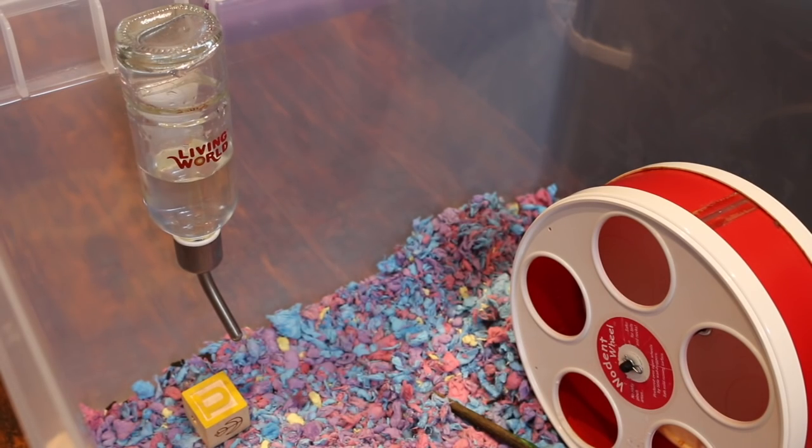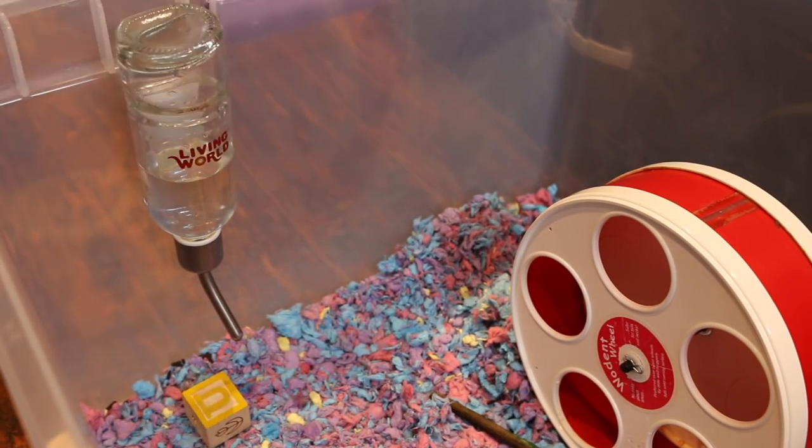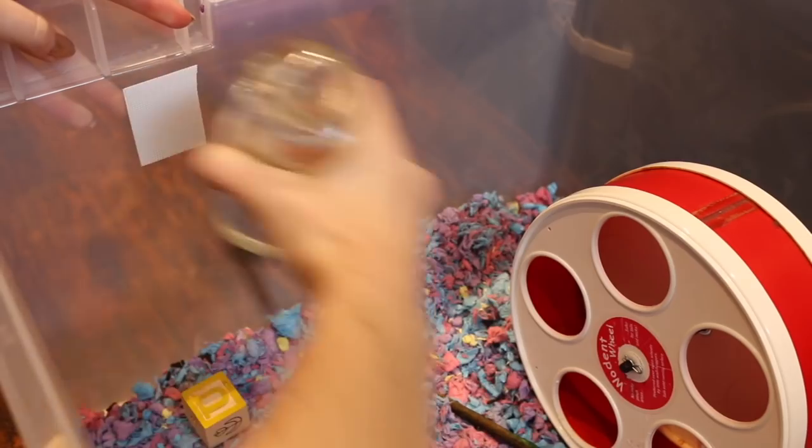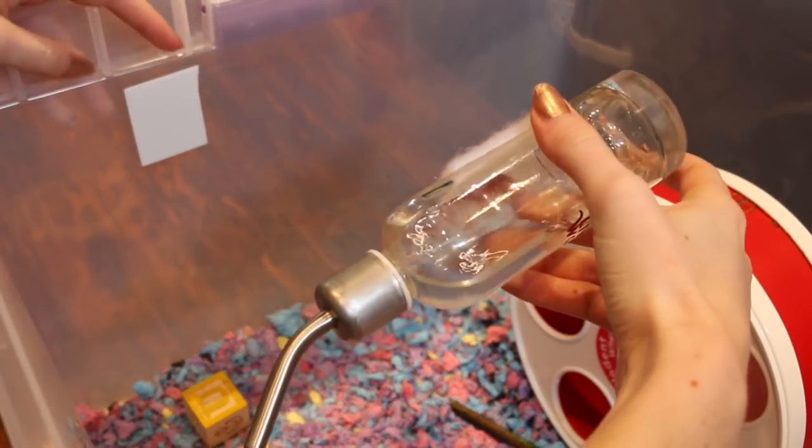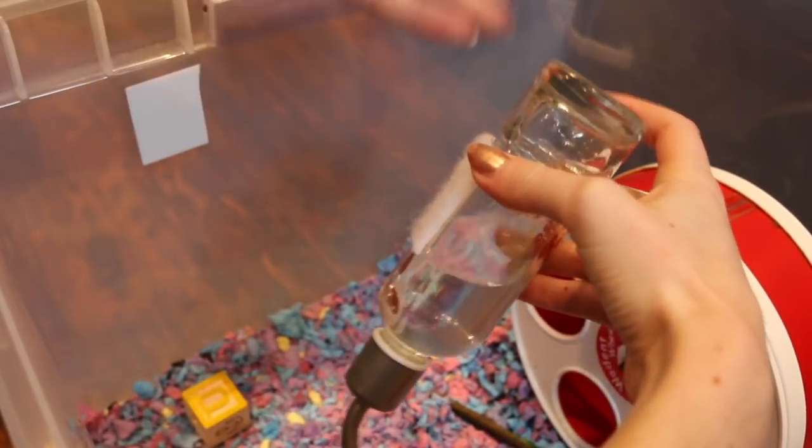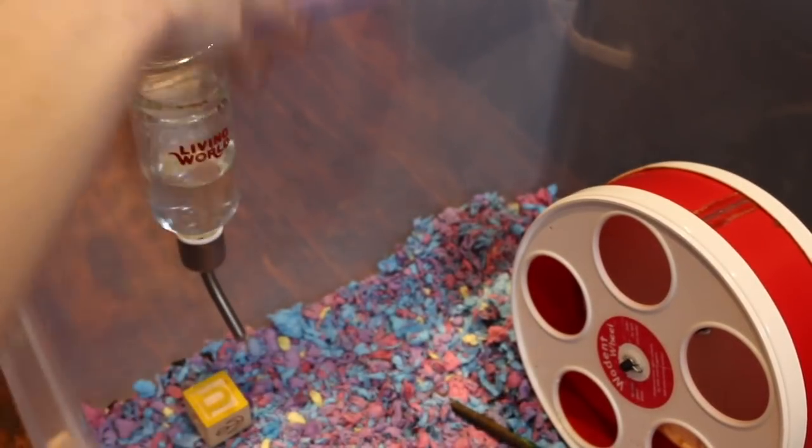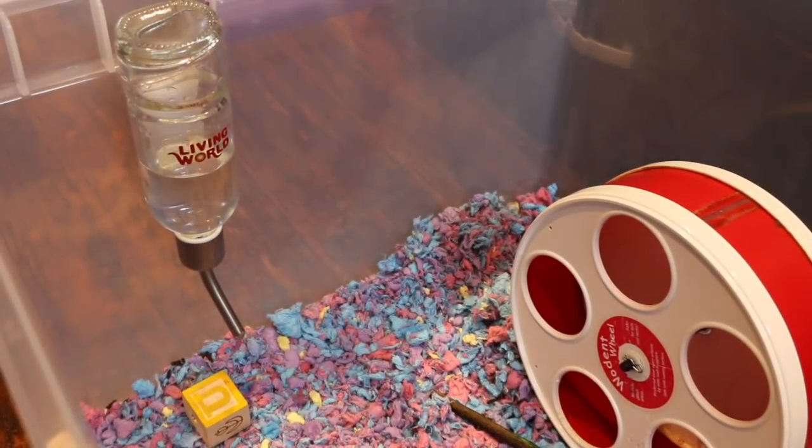It will hold and it shouldn't fall off. It also makes changing the water bottle super simple because you just rip it off, and it holds—it doesn't rip off with it or anything like that. Then you can easily stick it right back on there when you've refilled the water bottle.